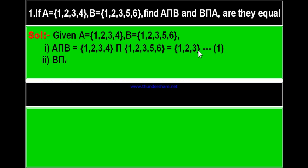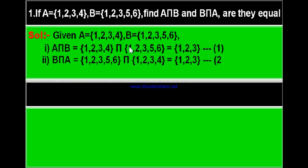Now let us find B intersection A. B intersection A means first write set B, which is {1, 2, 3, 5, 6}, intersection set A, which is {1, 2, 3, 4}. This is equal to — again you have to list out the common elements. Since you are finding common elements, 1, 2, and 3 are the common elements. Therefore B intersection A is also {1, 2, 3}.